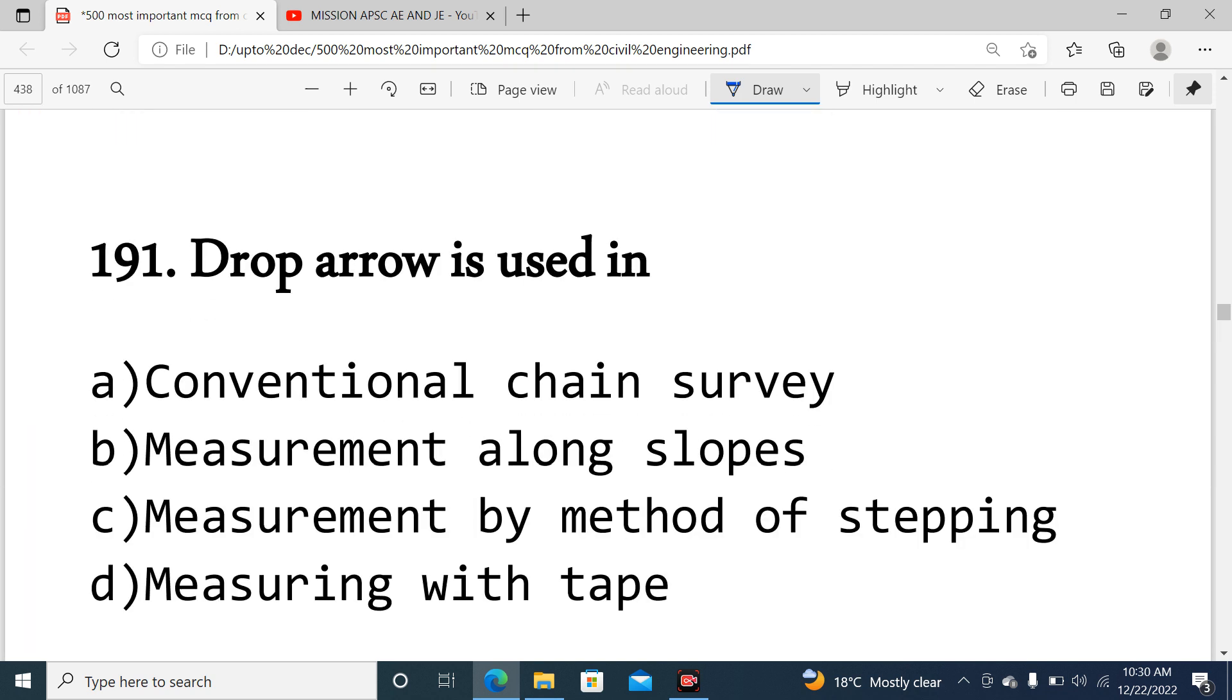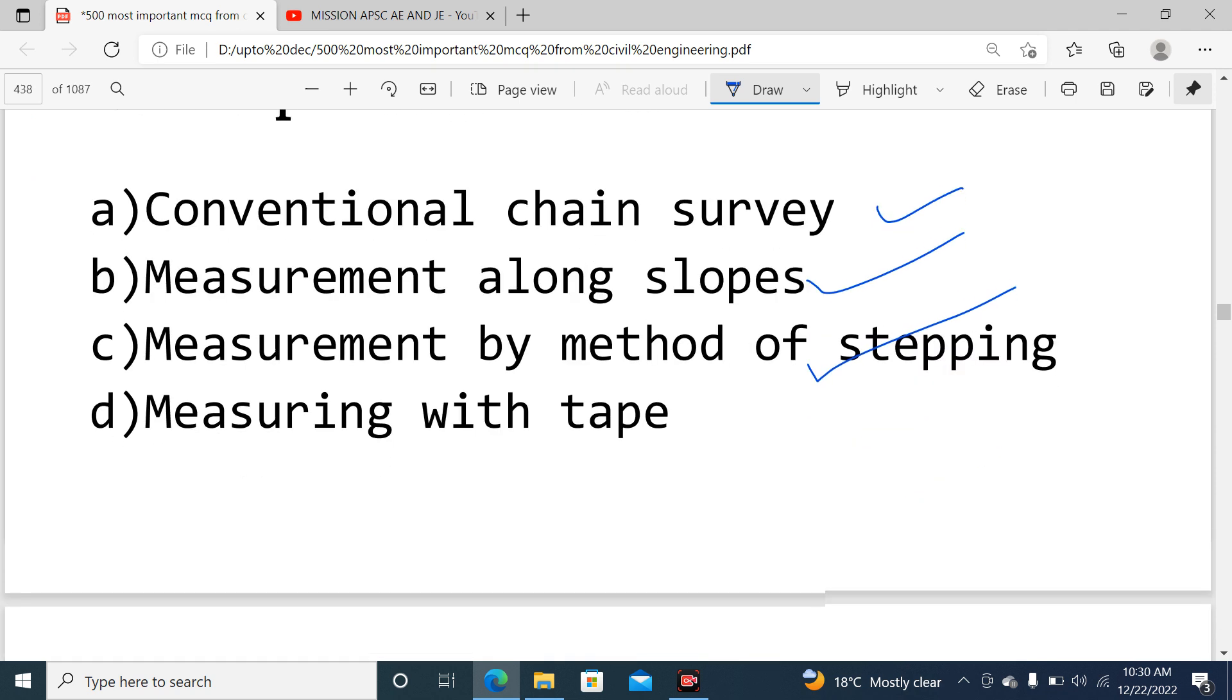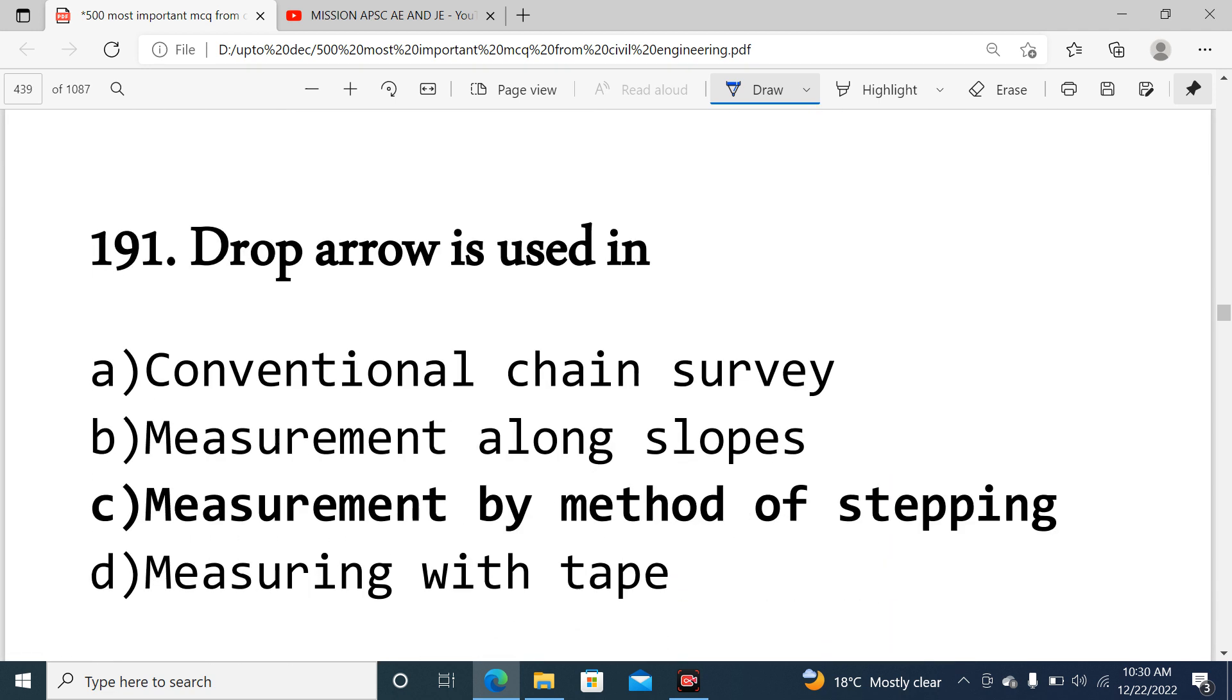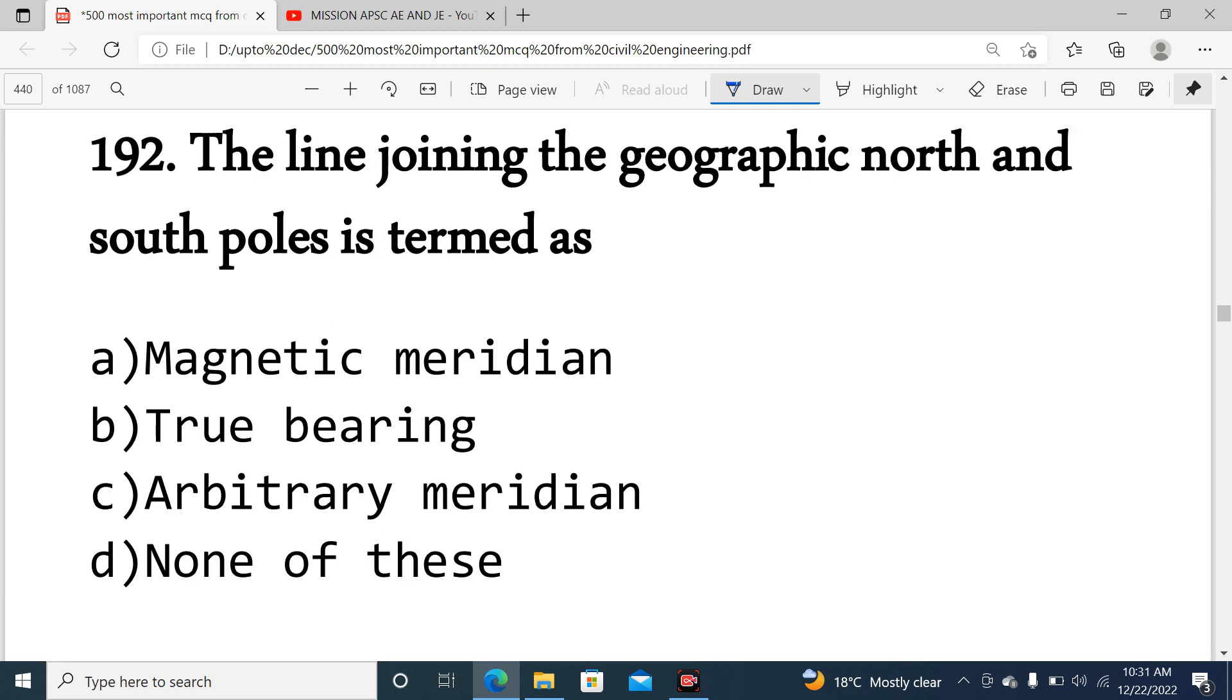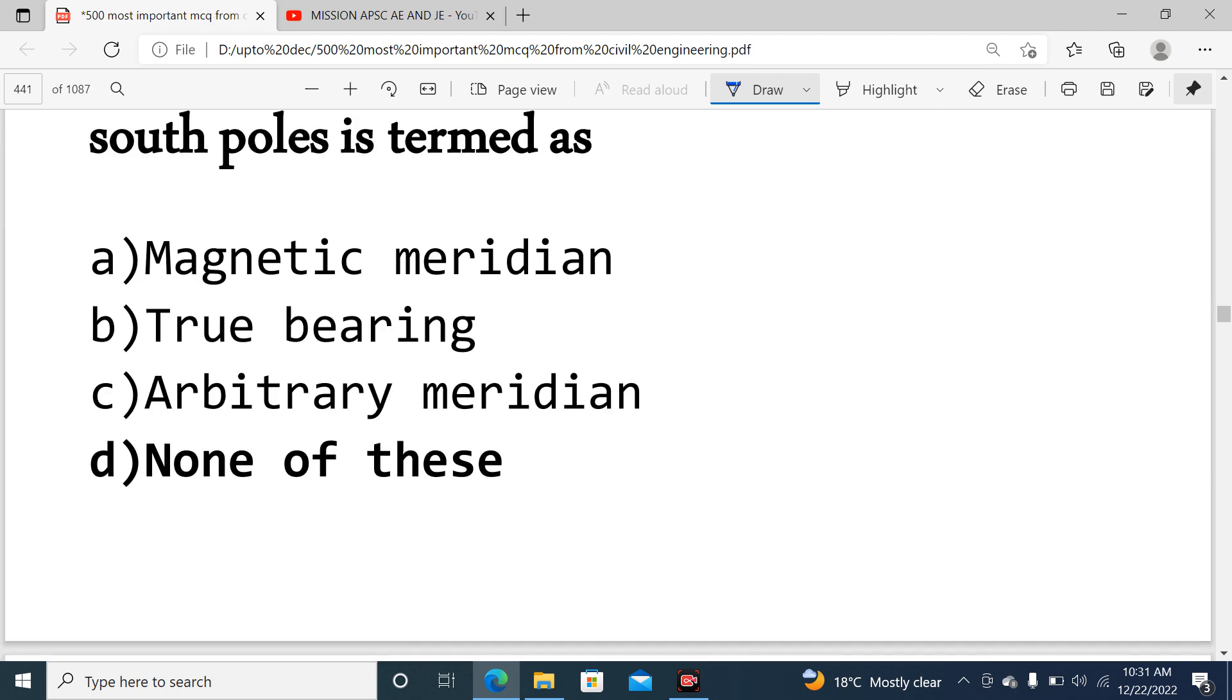Question 191: Drop arrow is used in the measurement by the method of stepping, when measuring on sloping ground. Question 192: The line joining the geographic north and south poles is termed as true meridian.